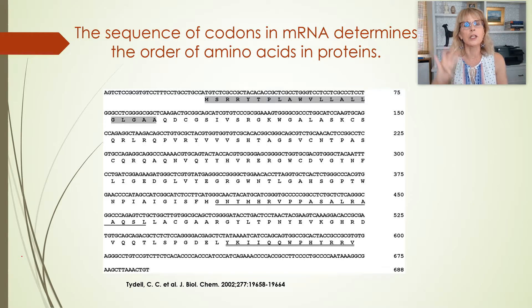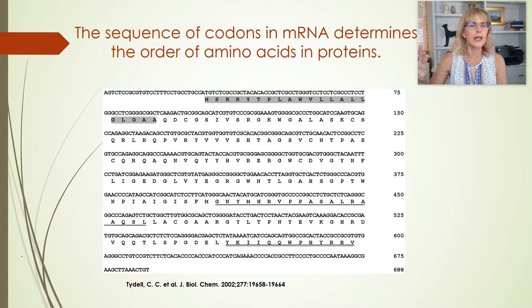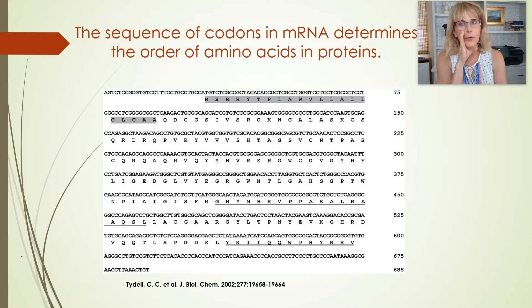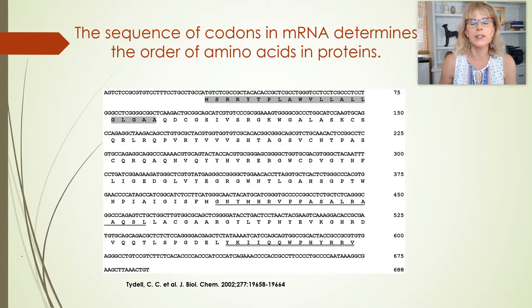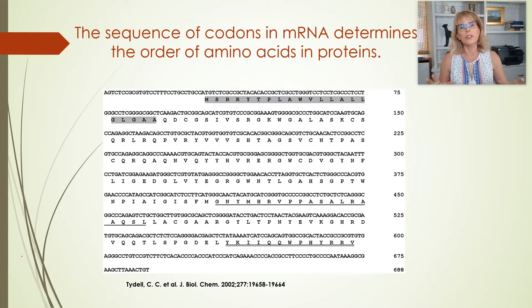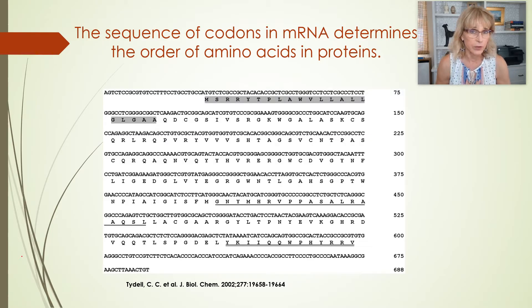The code is four letters — technically not four letters, technically four nucleotide bases: G, A, T, and C. And those four things are totally different from each other, at least from the enzyme's point of view.